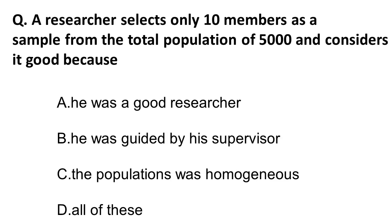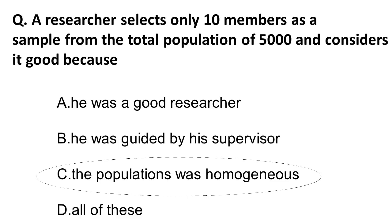The next question involves sampling: a researcher selects only 10 members as a sample from a population of 5000 and considers it good. When the sample size is small, the population must be homogeneous. For example, if you take students from a school of one lakh, selecting only from the 5th grade — where all students are the same age with similar characteristics — gives a homogeneous sample. So the correct answer is: the population should be homogeneous.